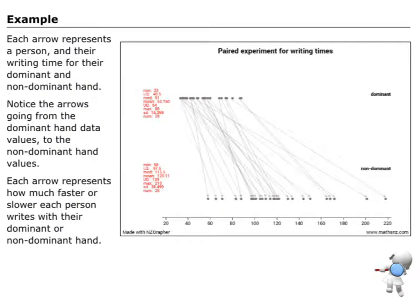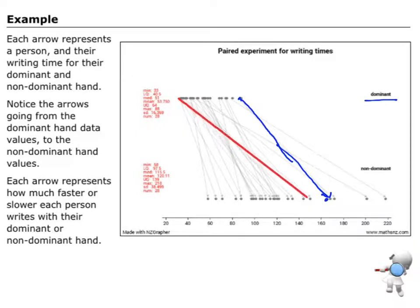Let me have a look at an example here. This is our paired experiment for writing times. What we've done is we've taken a bunch of people — they're going to write with their dominant hand, and they're going to write with their non-dominant hand, and record the time for both. So each dot at the top represents one person's time writing with their dominant hand, and the arrow that connects them goes to the second dot, which is that person's time to write with their non-dominant hand. Each arrow on this graph connects each person's writing time with their dominant hand compared to their non-dominant hand.